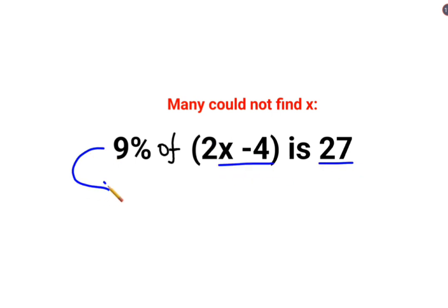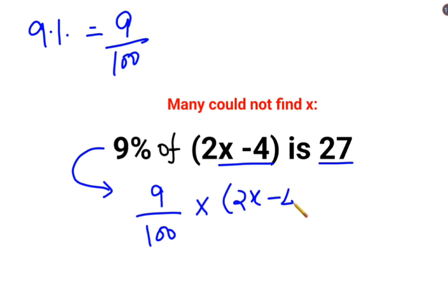First, let's write the entire question in its mathematical form. 9 percent - percent can also be represented as a fraction by dividing that number by 100. So this is 9 upon 100 multiplied. 'Of' means multiplied. 2x minus 4 is equal to 27.